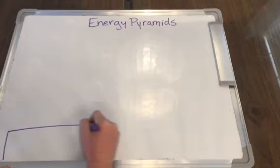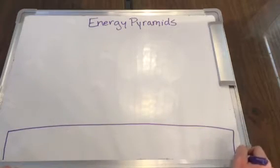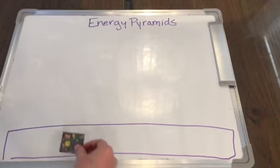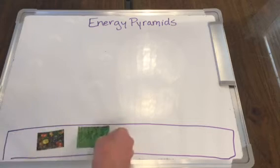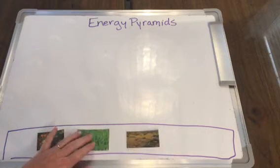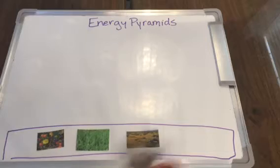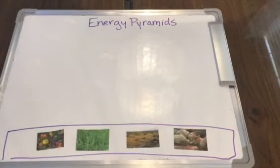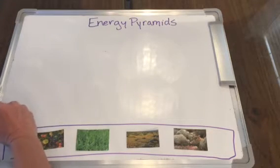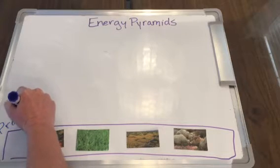So if I have the base level of the pyramid here, on this level I'm going to have all of the producers, like flowers and grasses and more flowers and shrubs. So I'm going to have a lot of organisms on this level that are called producers.